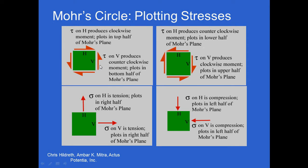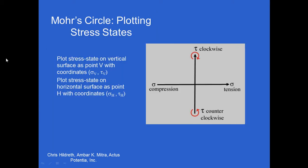An example of how this works: if you look at this vertical surface, look at the shear associated with it, which way is it trying to turn the stress element? In this case, it's trying to move it in a counterclockwise fashion, which is negative. Here, on the horizontal surface, it's trying to move it clockwise, so it's positive. That's how you get your values, your sigma v, tau v, and so on.